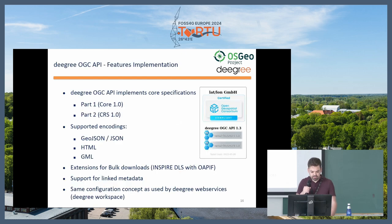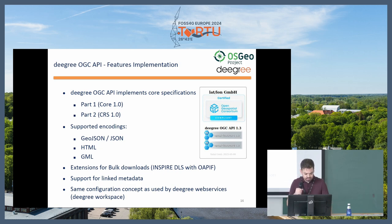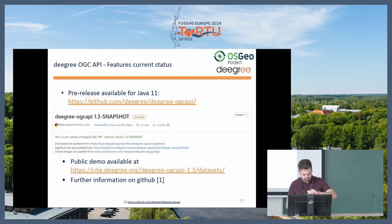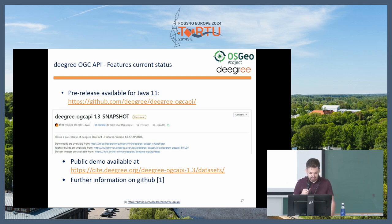Now I'll talk about Degree OGC API features. Degree is the reference implementation for part 1 and part 2. It supports GeoJSON, HTML, and GML output formats. There is an extension for bulk downloads if you want to download large datasets, support for link metadata, and importantly, you can use the same configuration concept from Degree web services for Degree OGC API features. There is also a pre-release available for Java 11 and a public demo available.